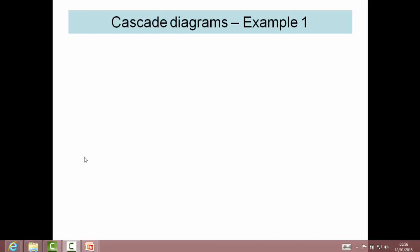The fourth lesson on critical path analysis looks at cascade diagrams, sometimes referred to as Gantt charts. These diagrams enable us to schedule tasks and also to change when things might require changing.